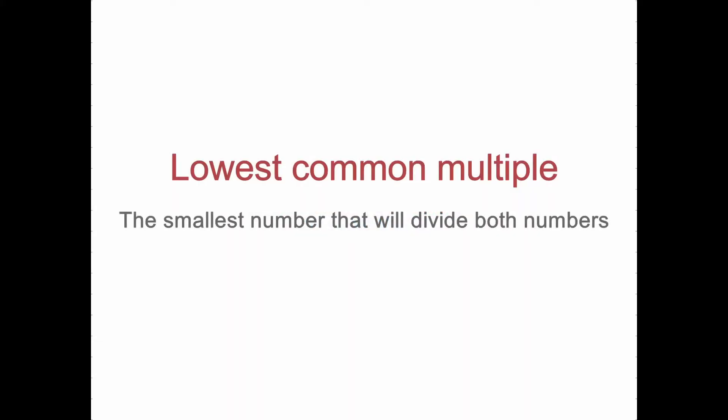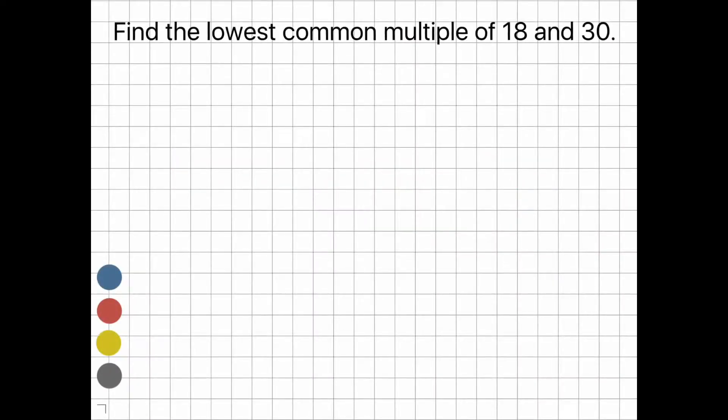The lowest common multiple is the smallest number that will divide both numbers. So the question: find the lowest common multiple of 18 and 30. The simple way to work this out is to list all the multiples for both numbers.